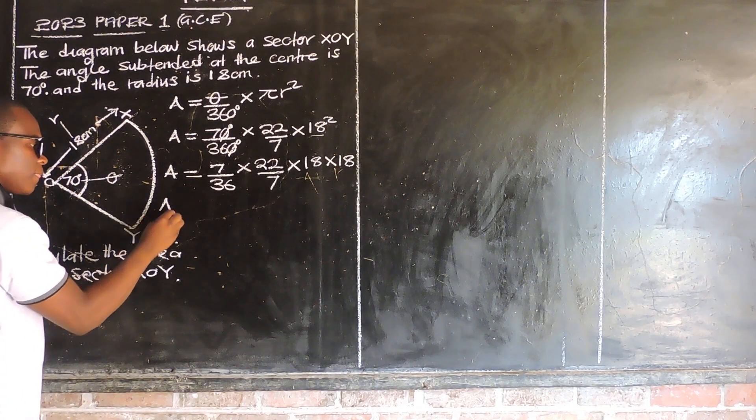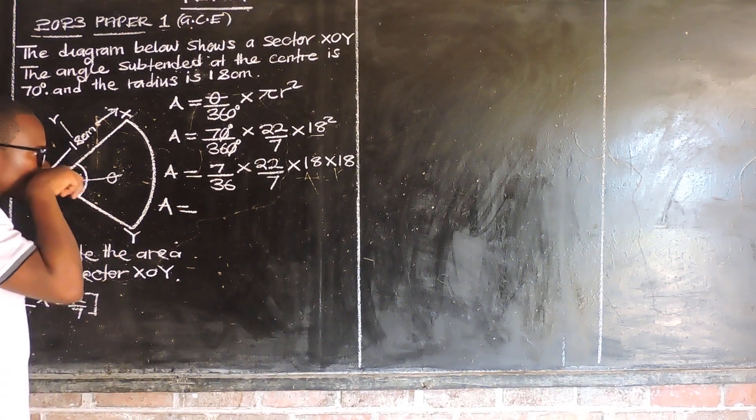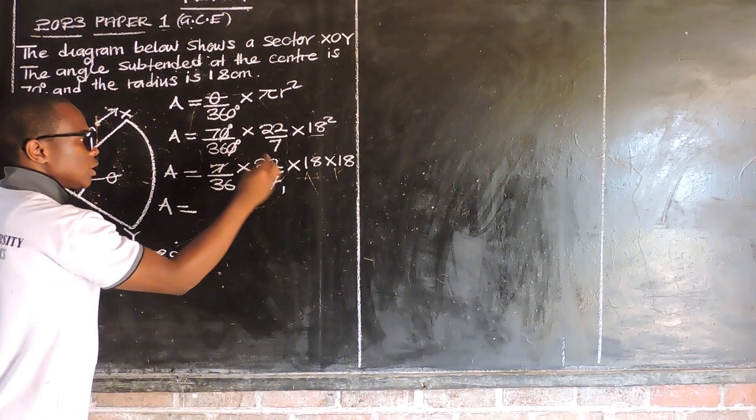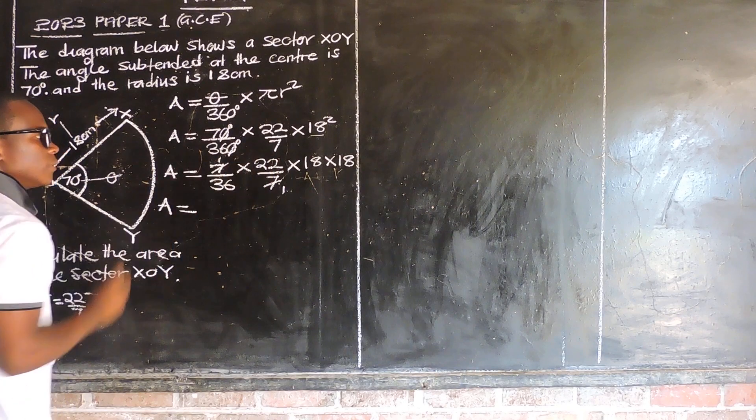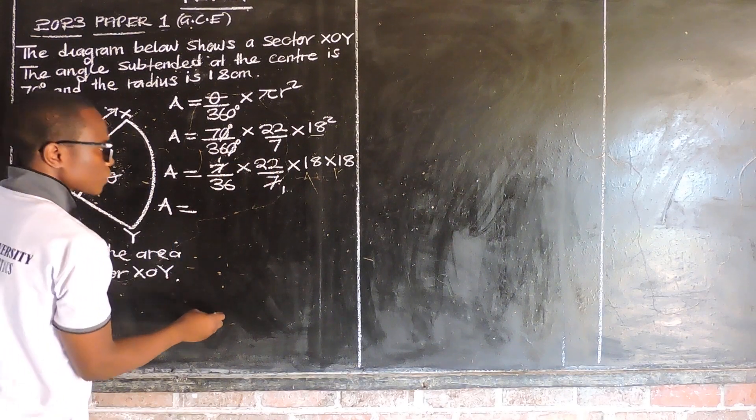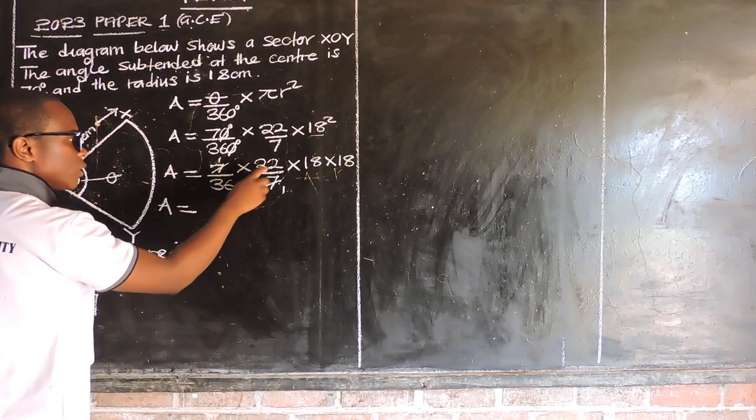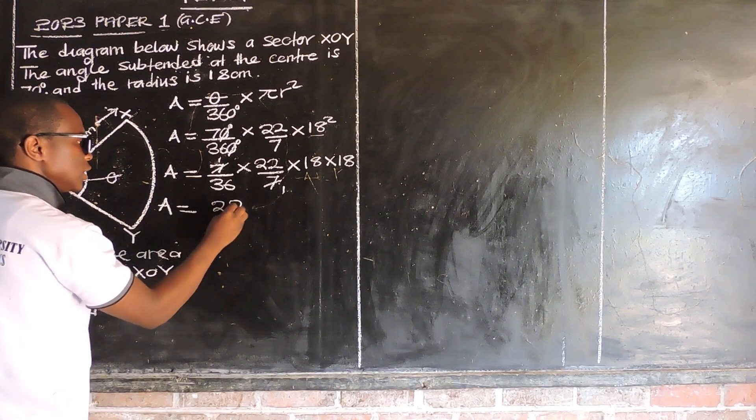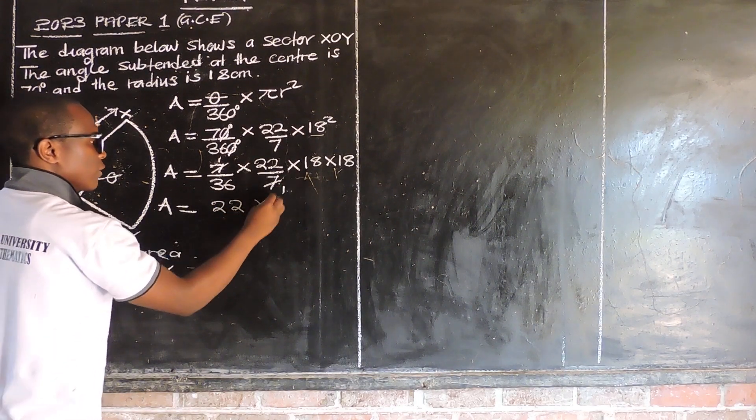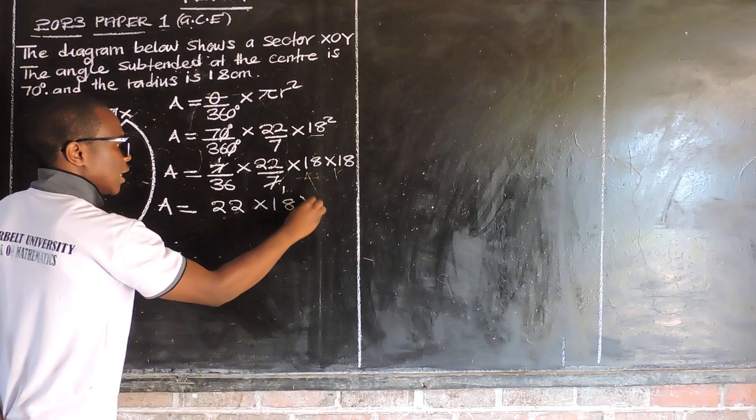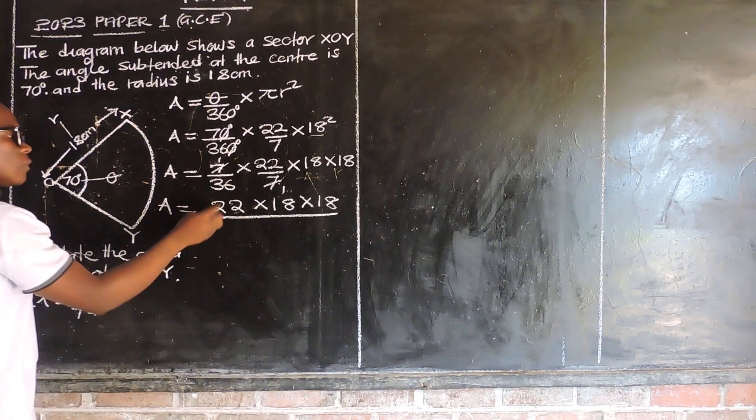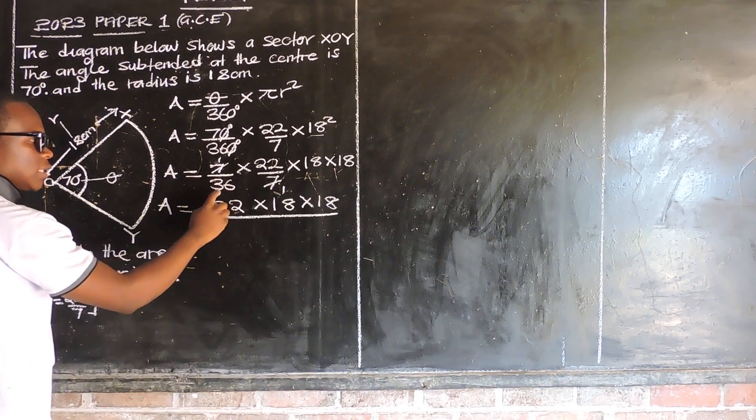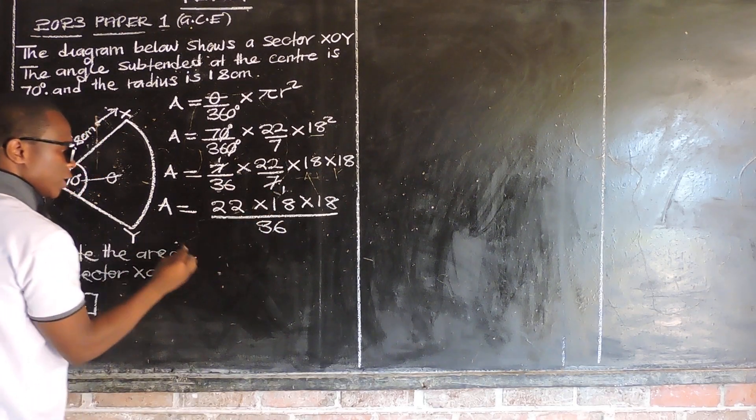So we can move on and say area is equal to... you can say this 7 into 7 is 1. Then you say 1 times 22, you get 22 times you have 18 times 18. Then over 1 times 36, so 36 times 1, you get 36.